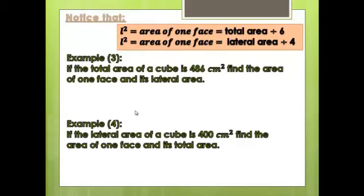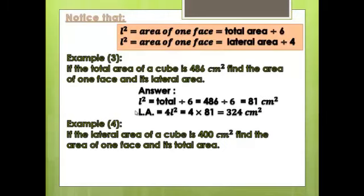Example 3: The total area of a cube equals 486 cm². Find the area of one face and its lateral area. Area of one face = total area ÷ 6 = 486 ÷ 6 = 81 cm². Now we have L² = 81.